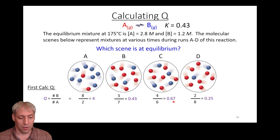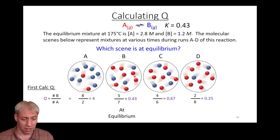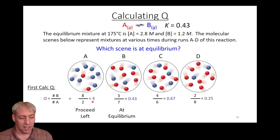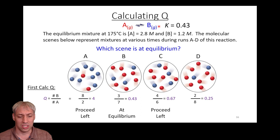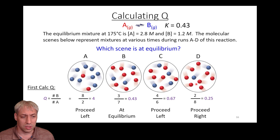Only one Q equals 0.43, so scene B is at equilibrium. The others are clearly not. Scene A has Q greater than K — it has to shift left or proceed left to generate more reactants. Scene C is also Q greater than K, so it's going to have to turn B into A to reach equilibrium. Scene D is Q less than K — 0.25 is less than 0.43 — so it's going to proceed to the right: A will convert to B until Q equals 0.43. By knowing K, you can take any condition and predict which way it will go.